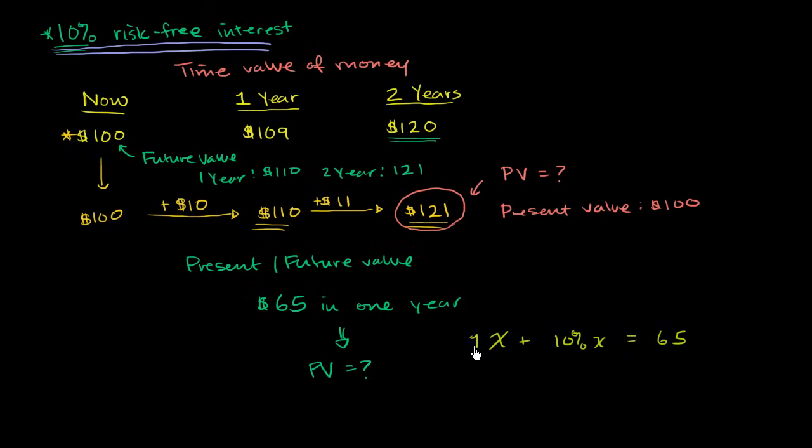And this is the same thing as 1x. Or we could say that 1x plus 10% is the same thing as 0.10x is equal to 65. Or you add these two, 1.10x is equal to 65.